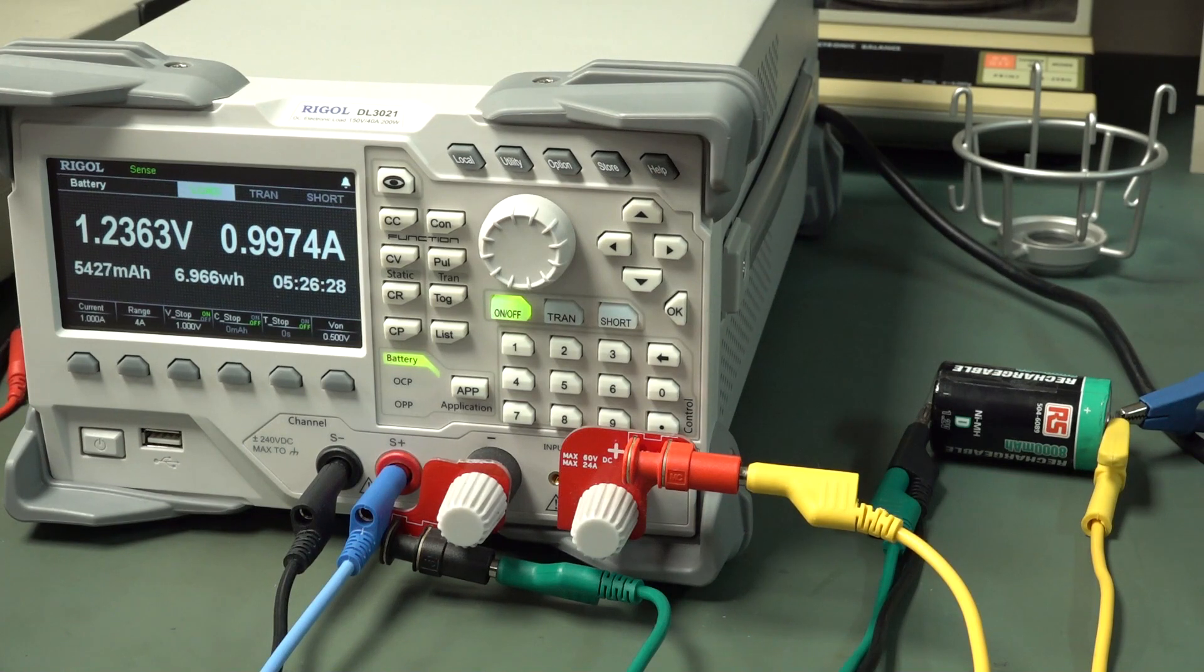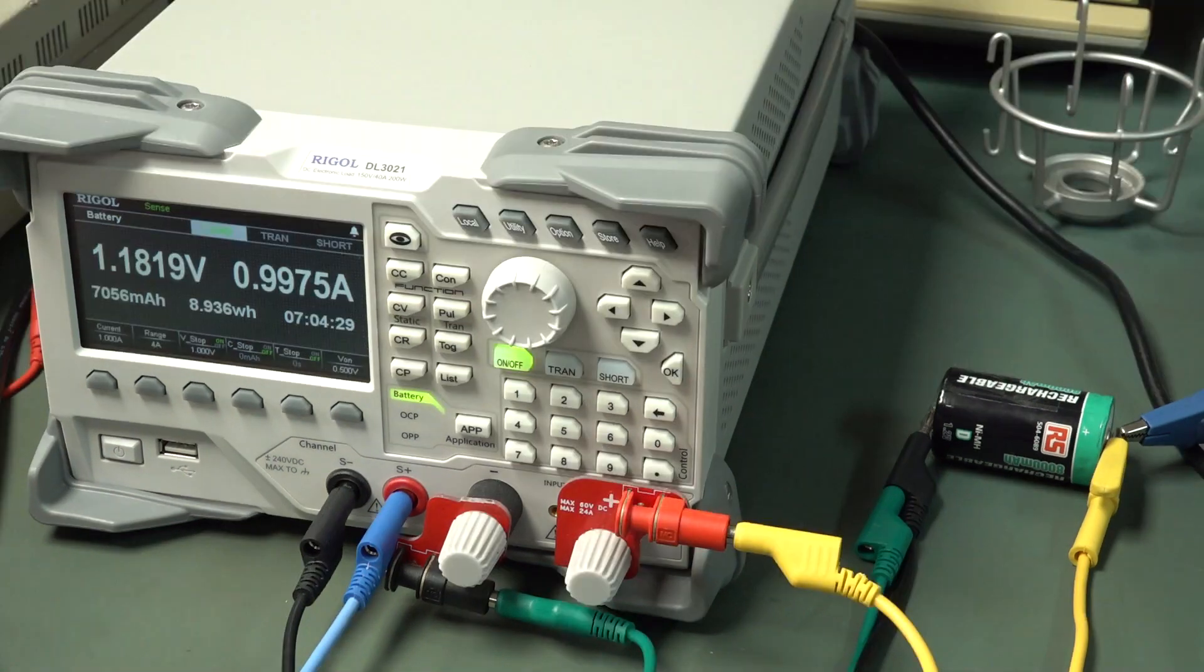But anyway, because this particular cell, in the data sheet, it doesn't have any characteristic curves. In fact, it doesn't even specify what current the capacity, the 8,000 milliamp hours, is rated at. Because as I said, the capacity of the battery will vary with the discharge current.